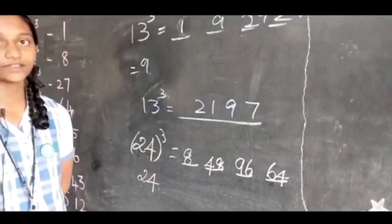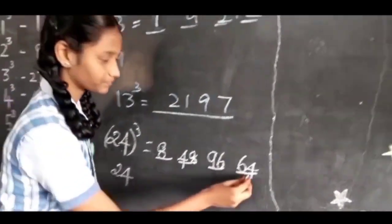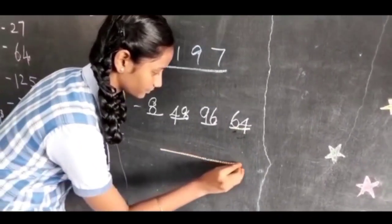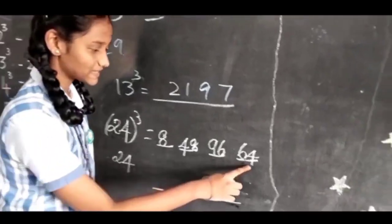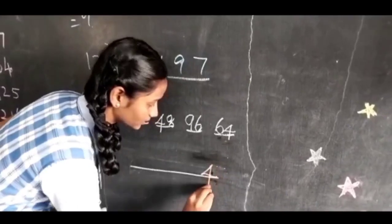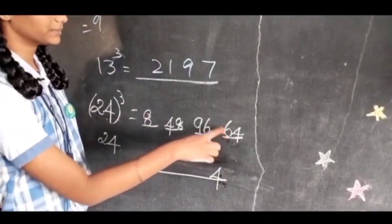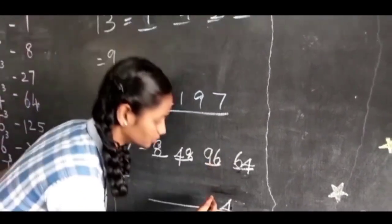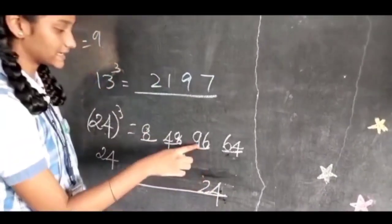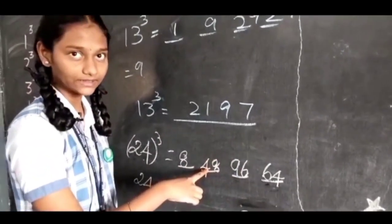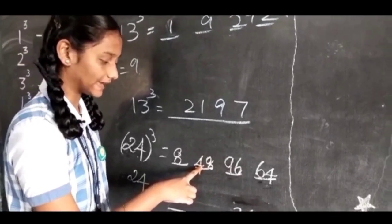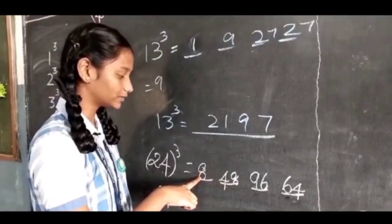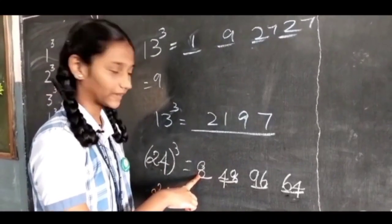Here we must concentrate on the units place. The units place is 4, and the balance 6 will be carryover to 96, and 96 plus 6 is 102. Balance 10 will be carryover to 48, and 48 plus 10 is 58. 5 will be carryover to 8, and 8 plus 5 is 13.